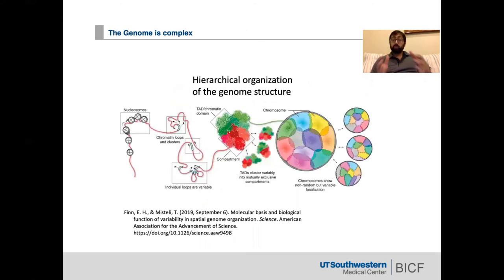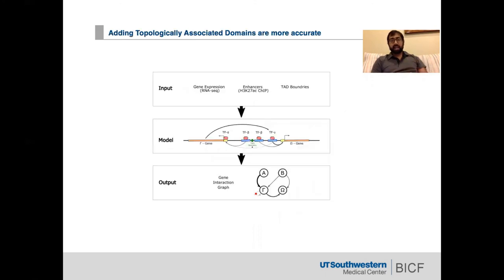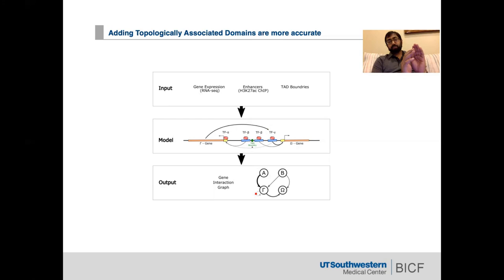However, we all know that the genome is quite complex. We have nucleosomes, chromatin loops, individual loops that are very variable, TADs, chromatin compartments, as well as LADs. So what we decided was to take TADs and incorporate them into our model. We looked at gene expression data and enhancer data — we chose H3K27ac as our enhancer data, as these two marks are very abundant and easily used by many people — and we can always add more data to the model.